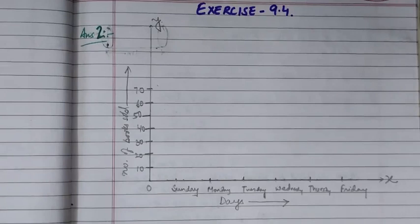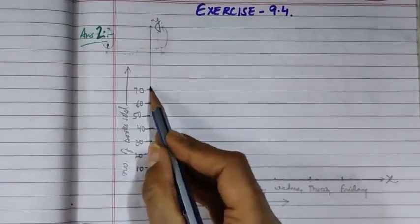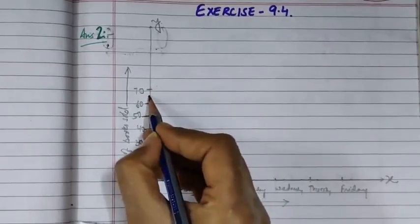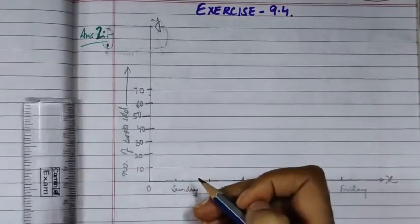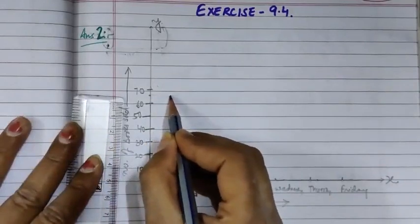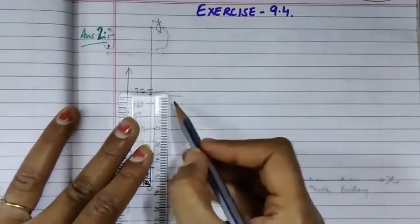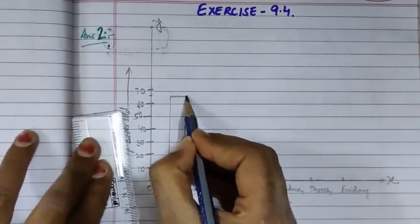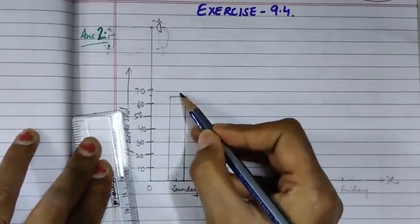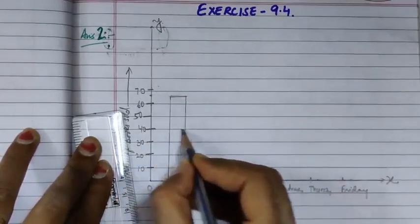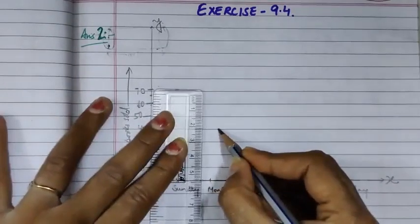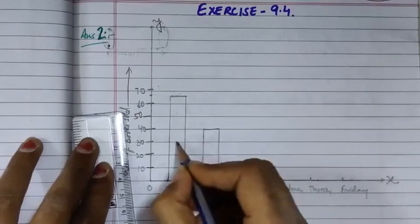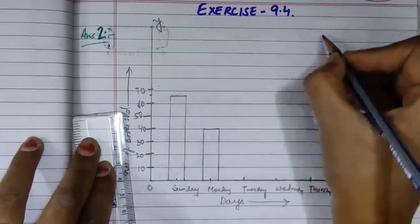Now we draw the bars. On Sunday, 65 books were sold. Since 65 is between 60 and 70, we take the halfway point between those two. We draw the bar for Sunday up to that halfway mark between 60 and 70. On Monday, 40 books were sold, so we draw the bar up to the line at 40. Remember when drawing the bars, try to make all bars of equal width — don't make one thin and another thick.